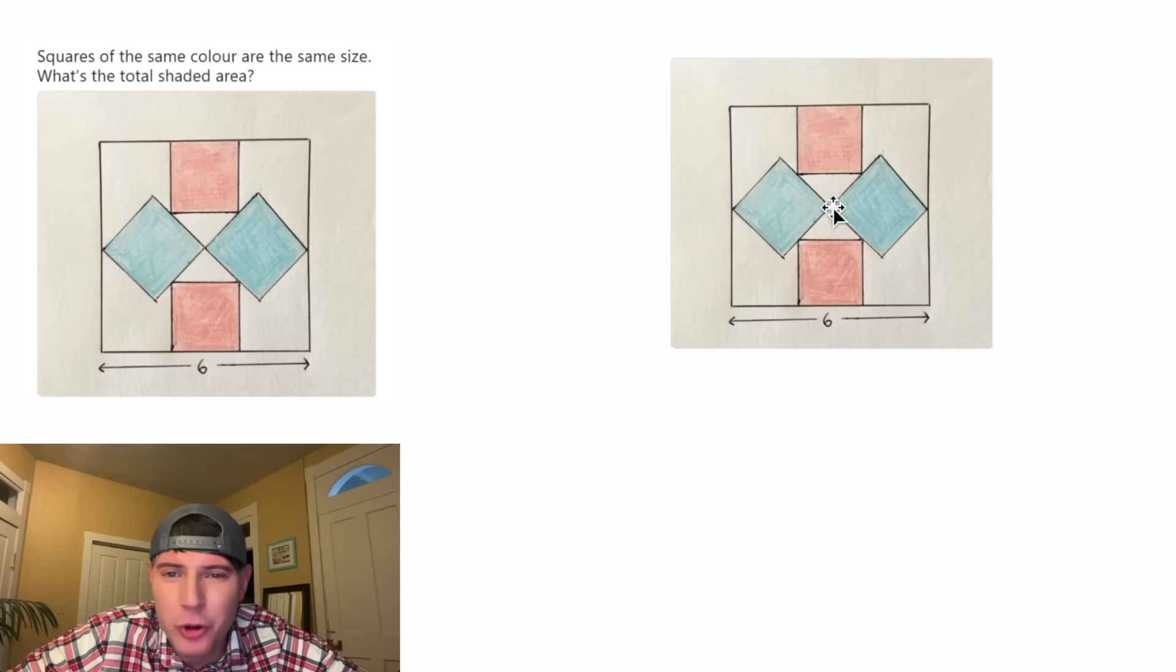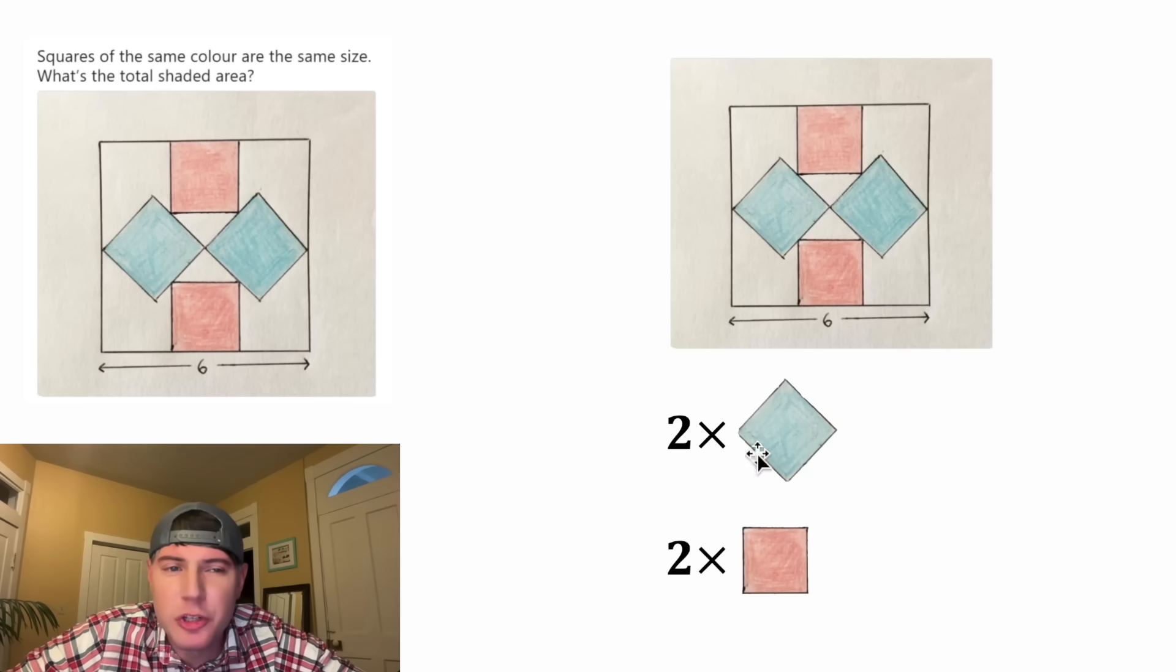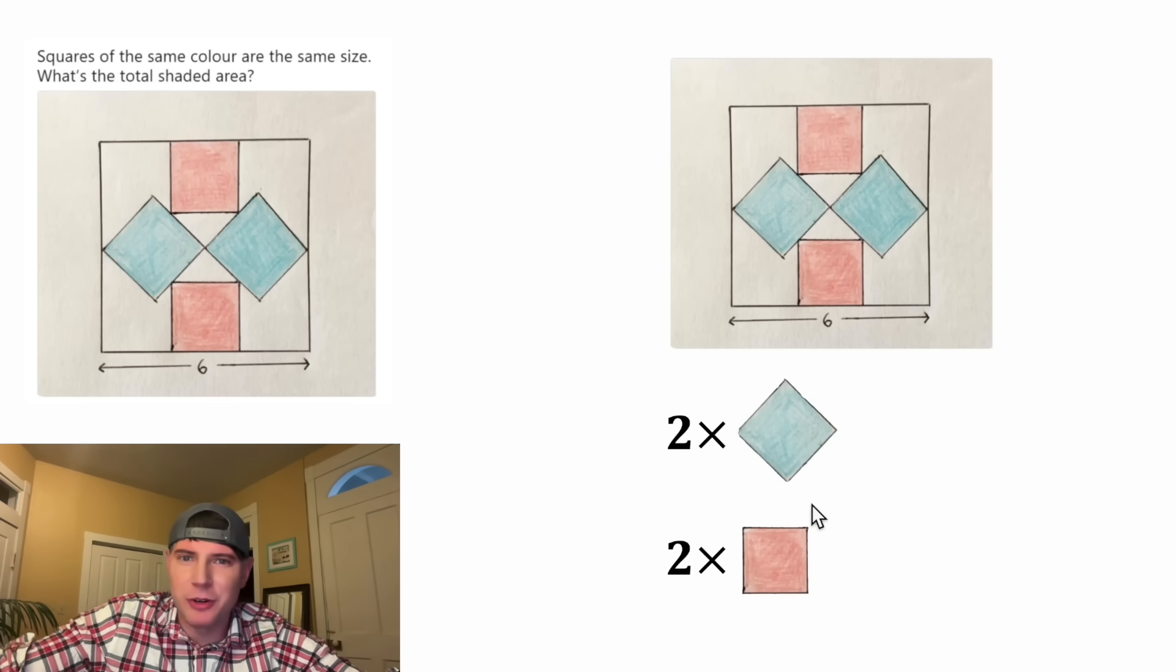So it's asking for the total shaded area. I believe that means two of the blue ones plus two of the red ones. Once we find all this, we should have the answer to our question.